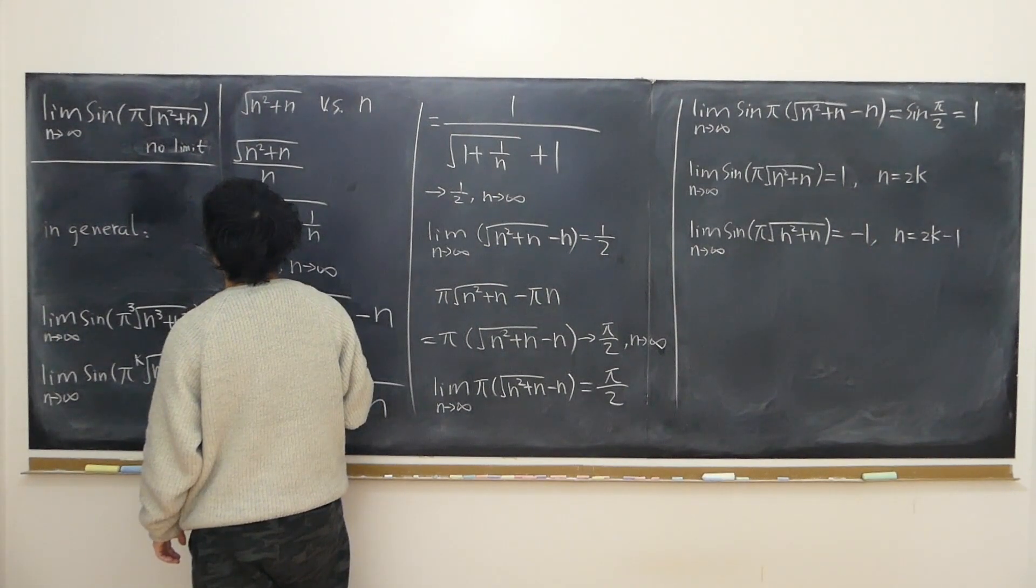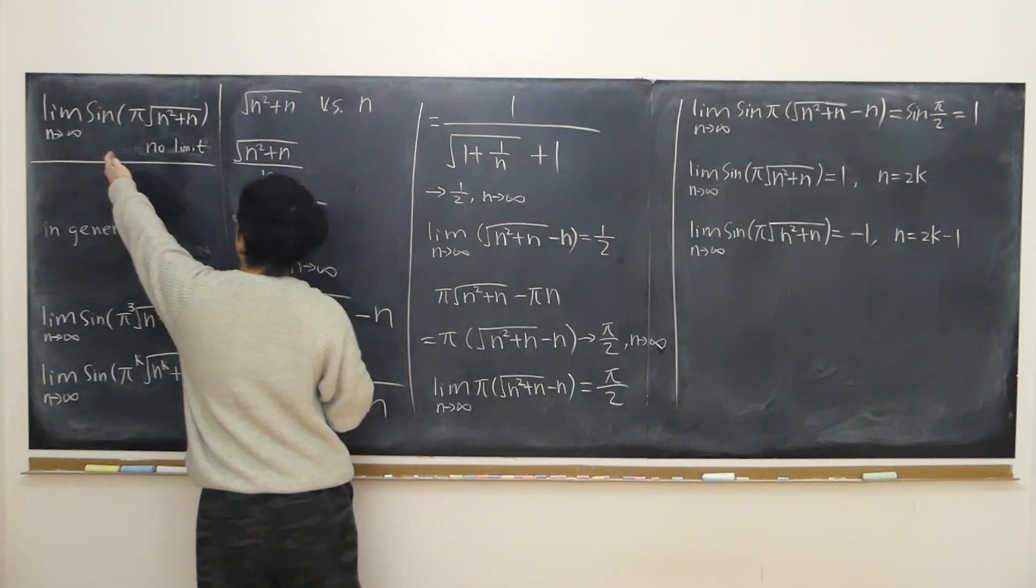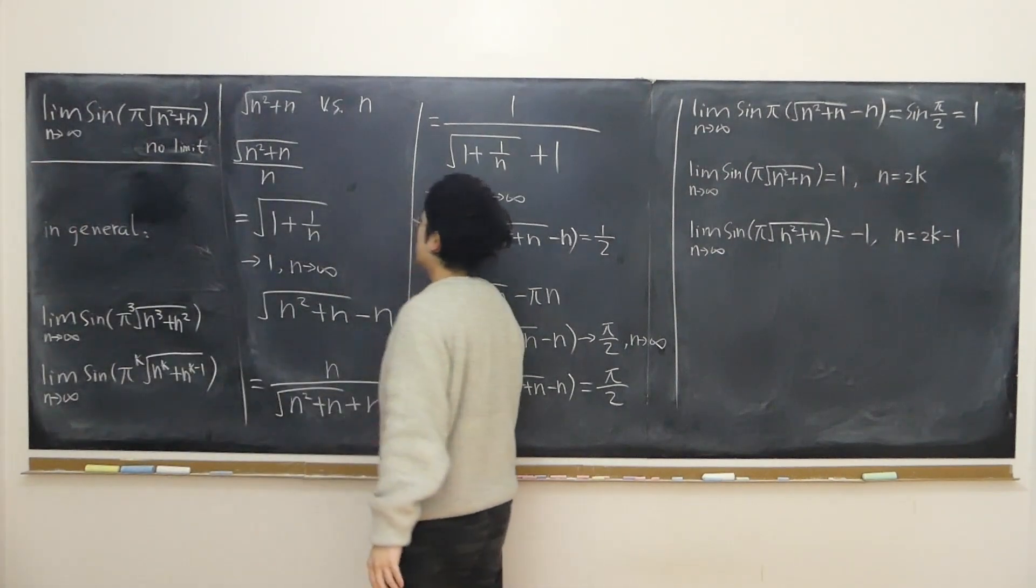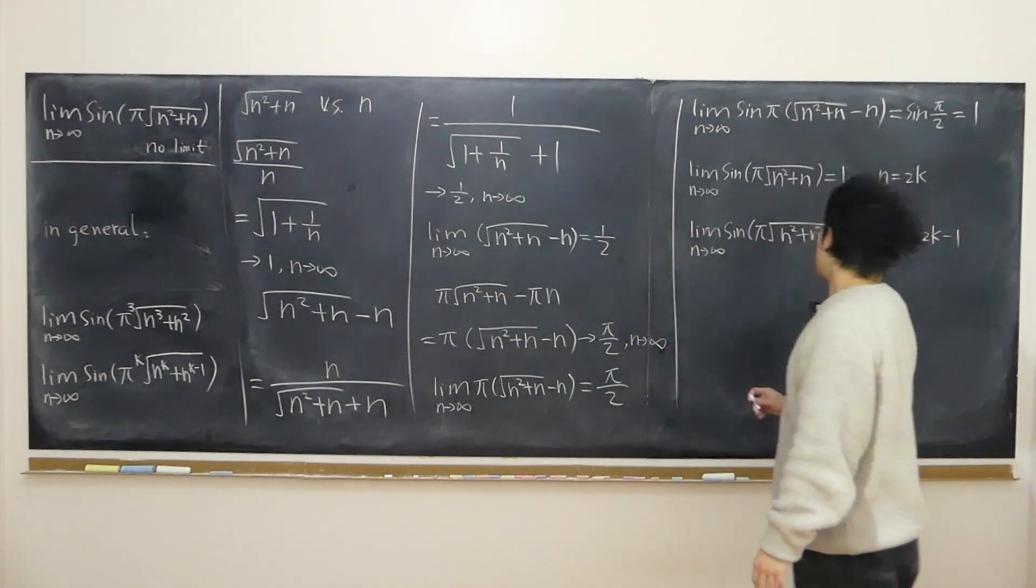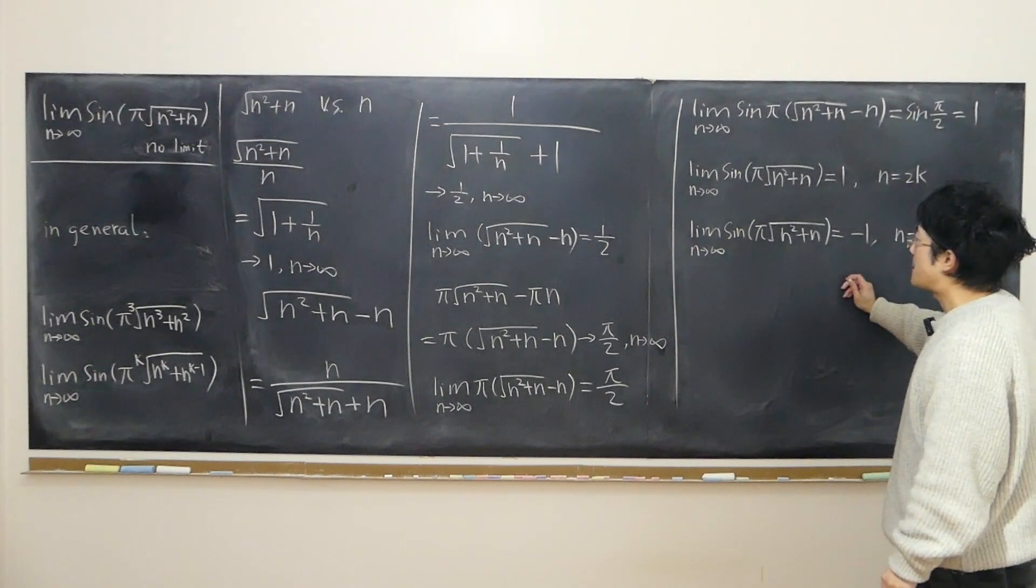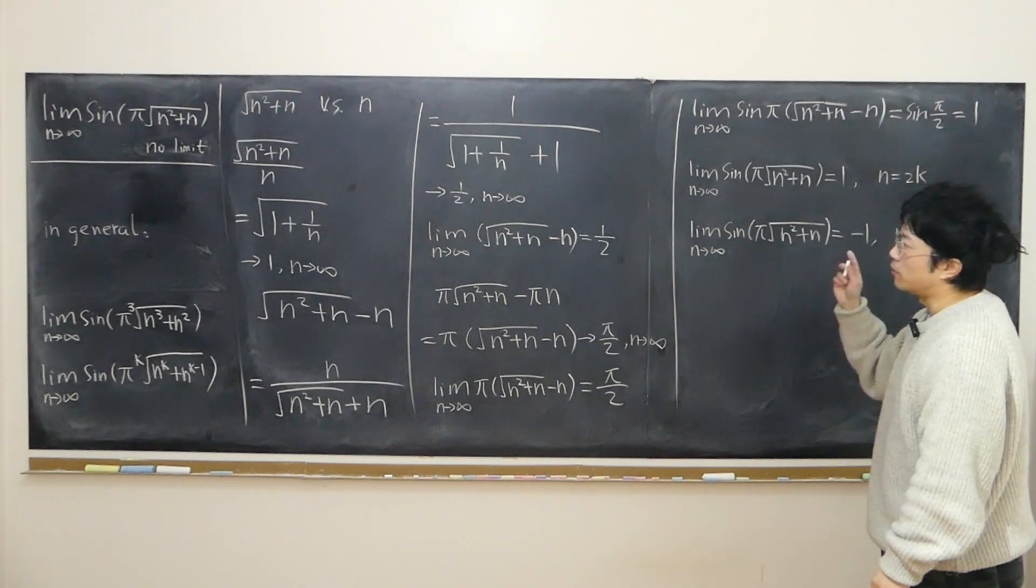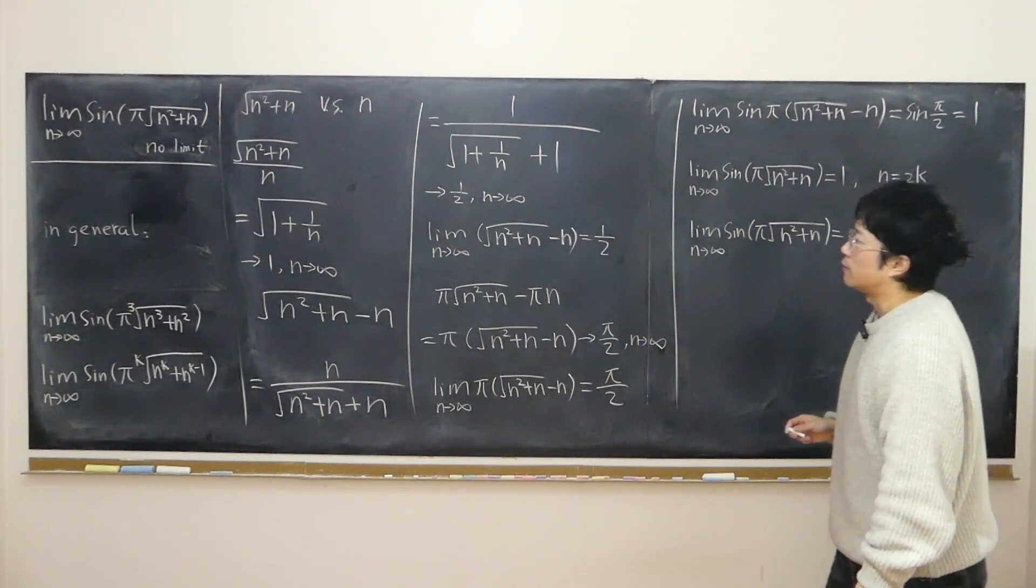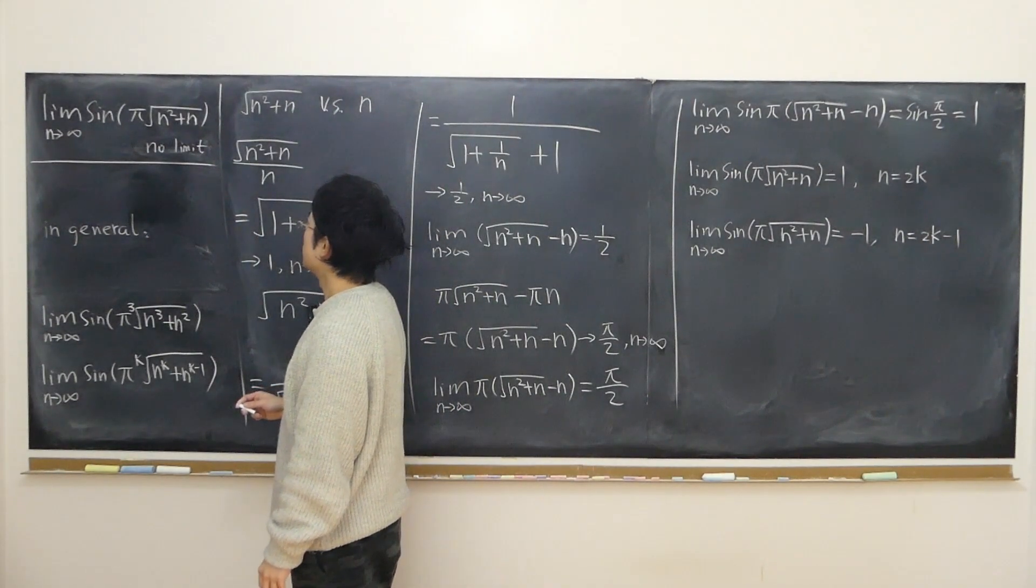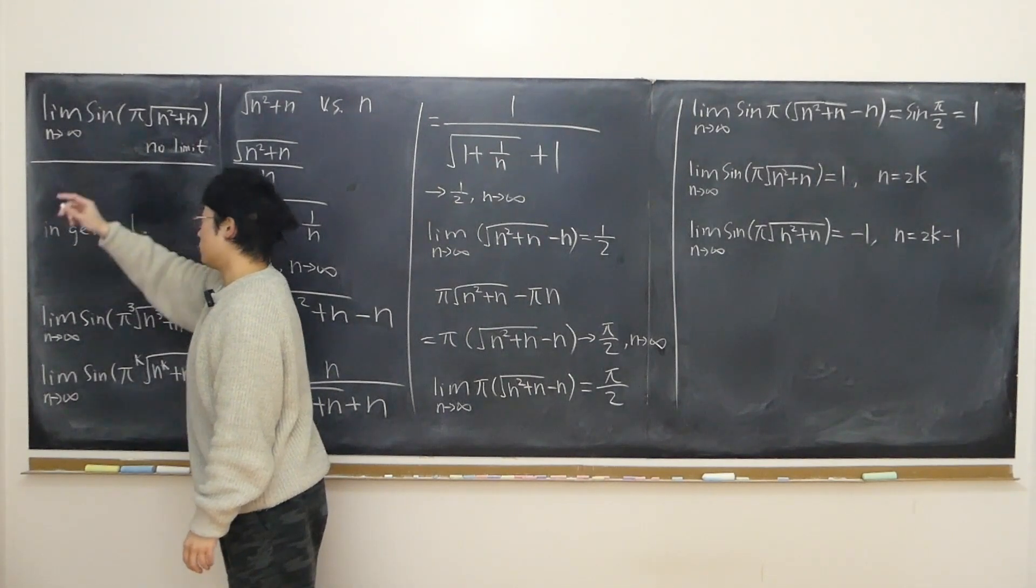If I'm not mistaken, if the question were written like sine squared of the same thing, then of course after we square everything, they're both just approaching one. Both the even sequence and odd sequence are both approaching one, but that's a different case in a different universe. If the question is really written like this, then there's no limit.